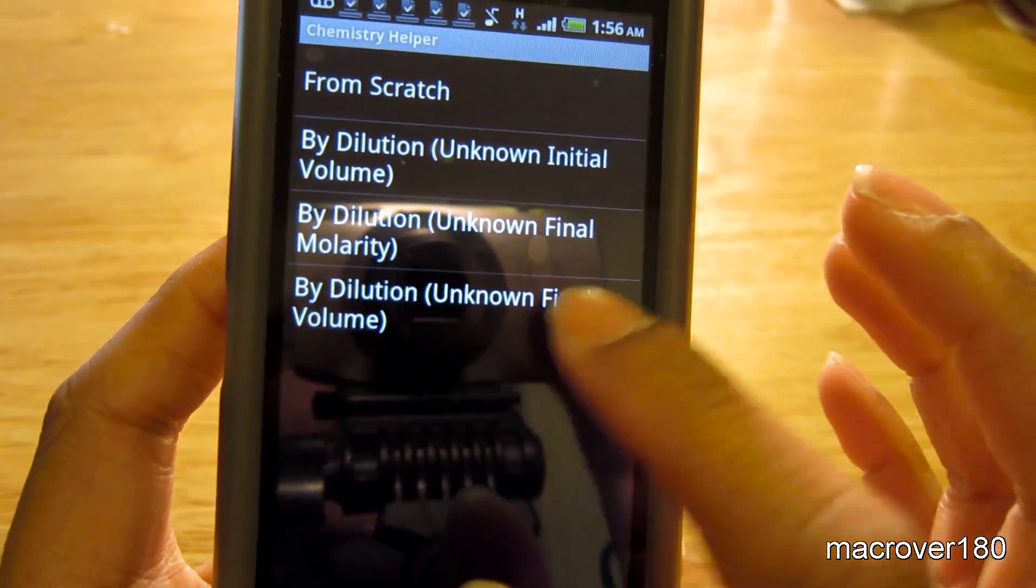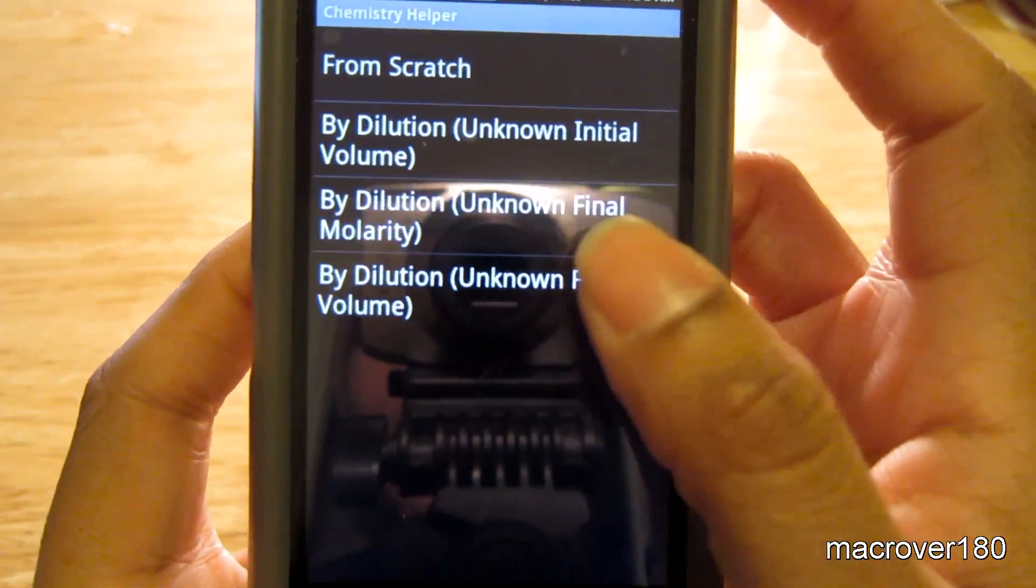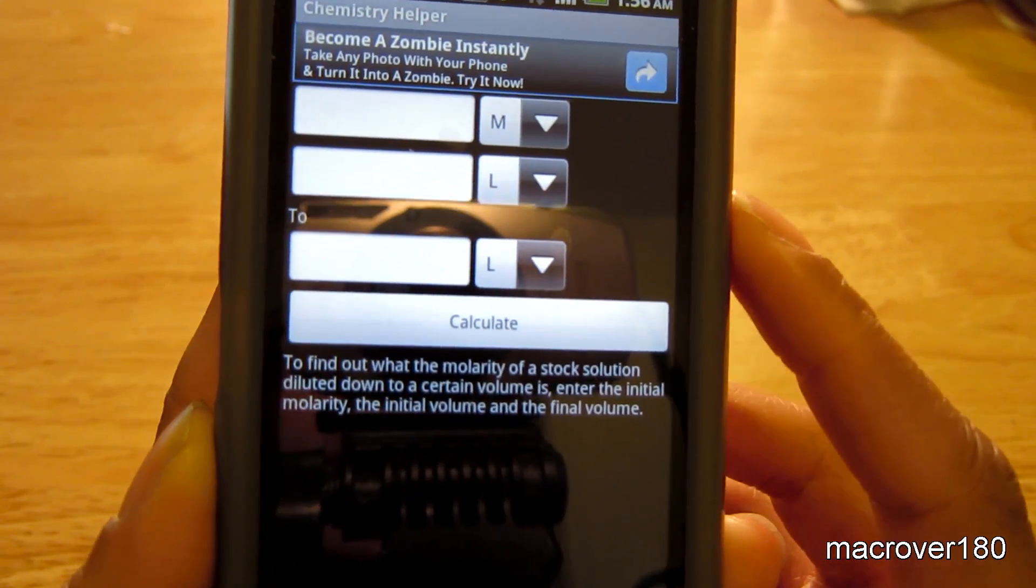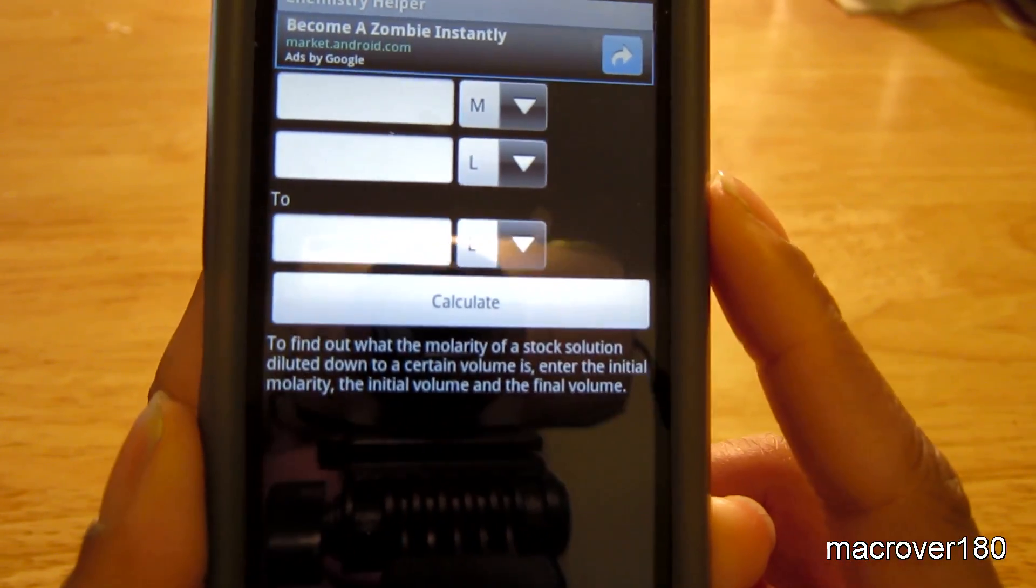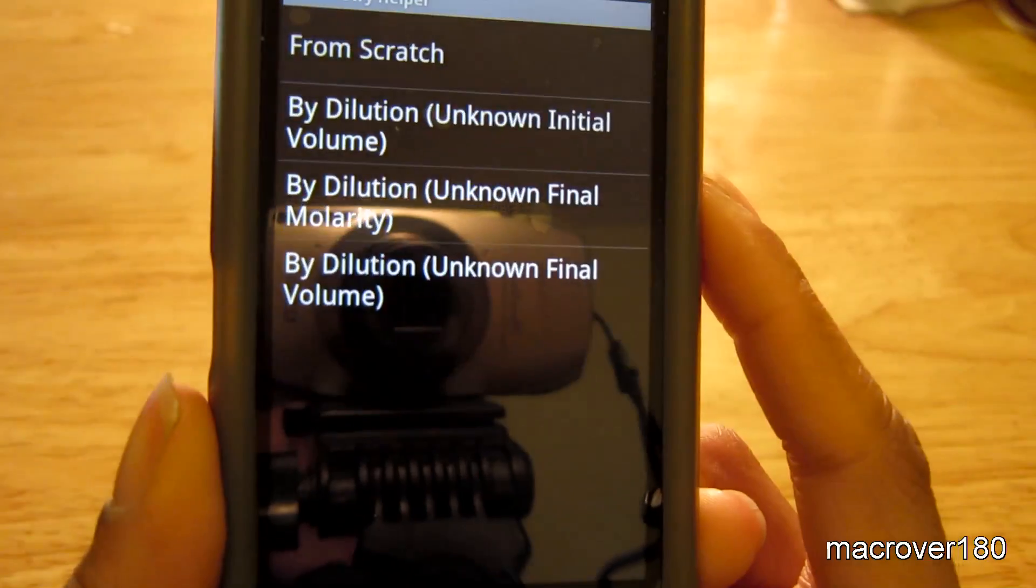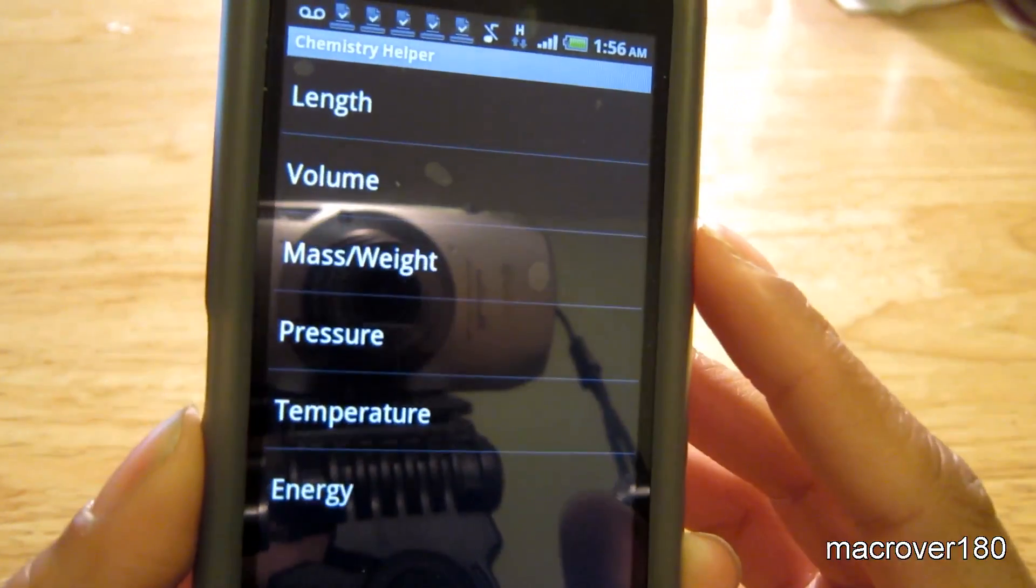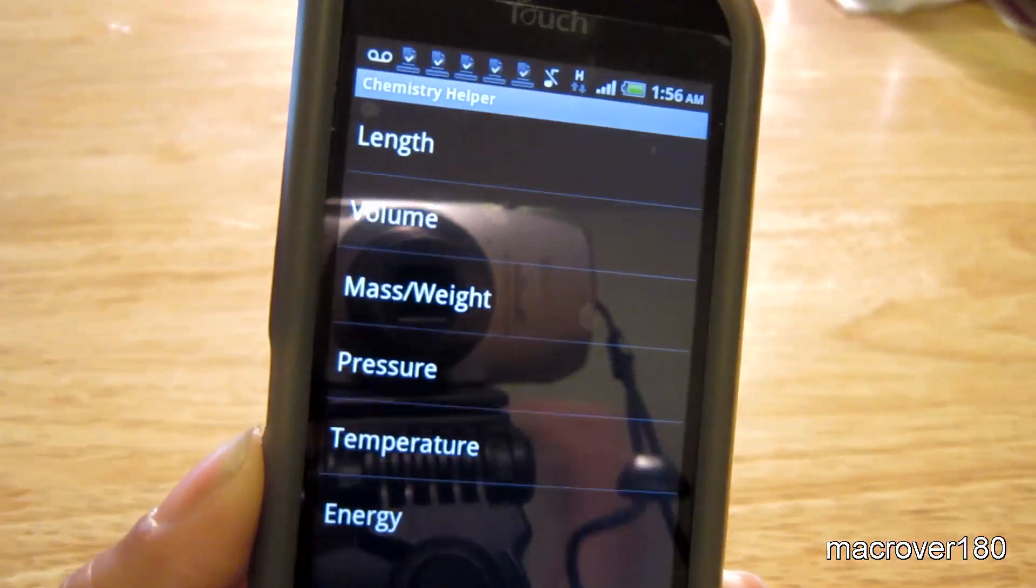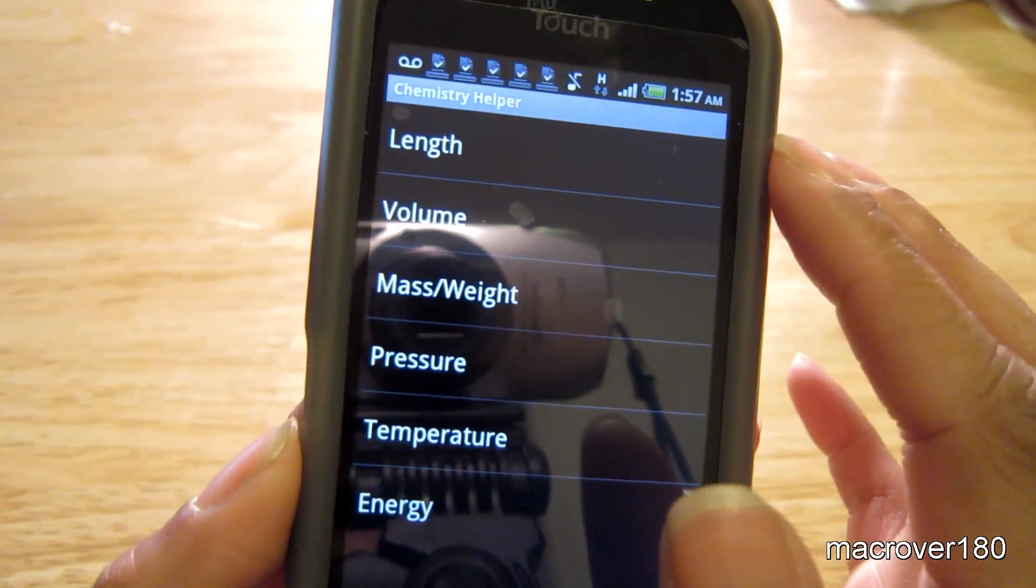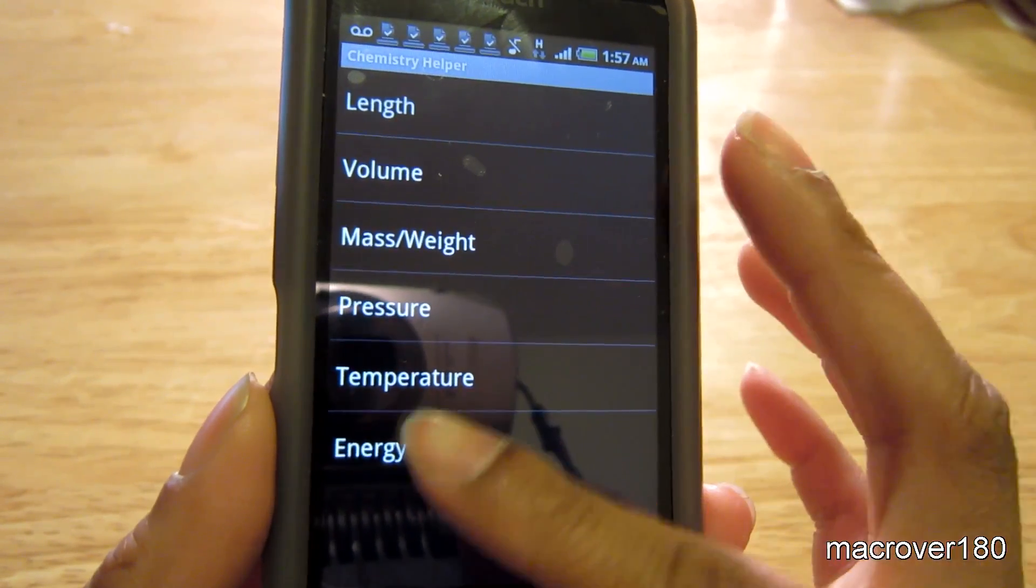And finally, you can do it by unknown final volume. The conversion tool essentially allows you to convert between units commonly used in chemistry. So you have length, volume, mass, weight, pressure, temperature, and energy.